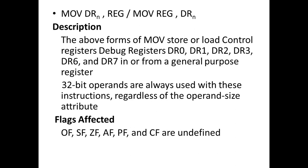The MOV instruction forms that store or load debug registers DR0, DR1, DR2, DR3, DR6, and DR7 move data into or from general-purpose registers. These move instructions store the debug registers into the general-purpose registers or extract their contents from the general-purpose registers. A 32-bit operand is always used regardless of the operand size attribute. The flags affected are: auxiliary carry flag, sign flag, zero flag, overflow flag, parity flag, and carry flag.